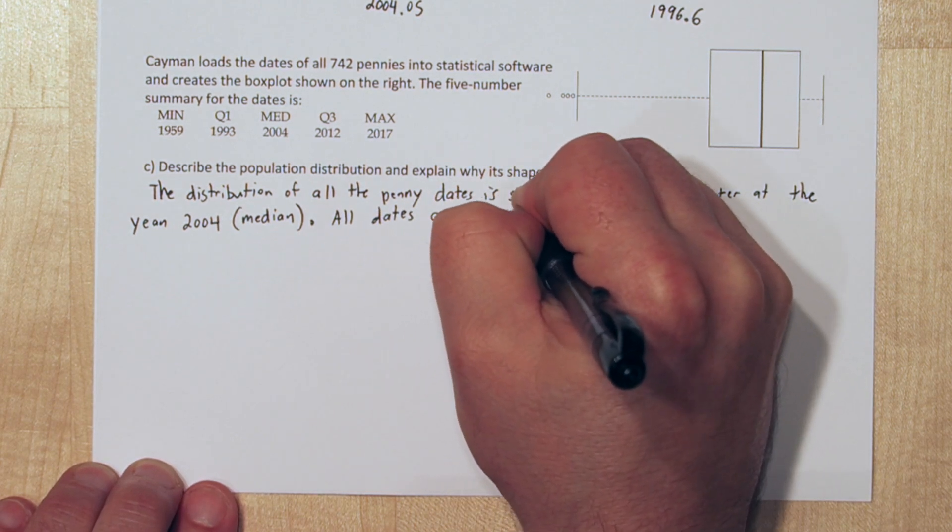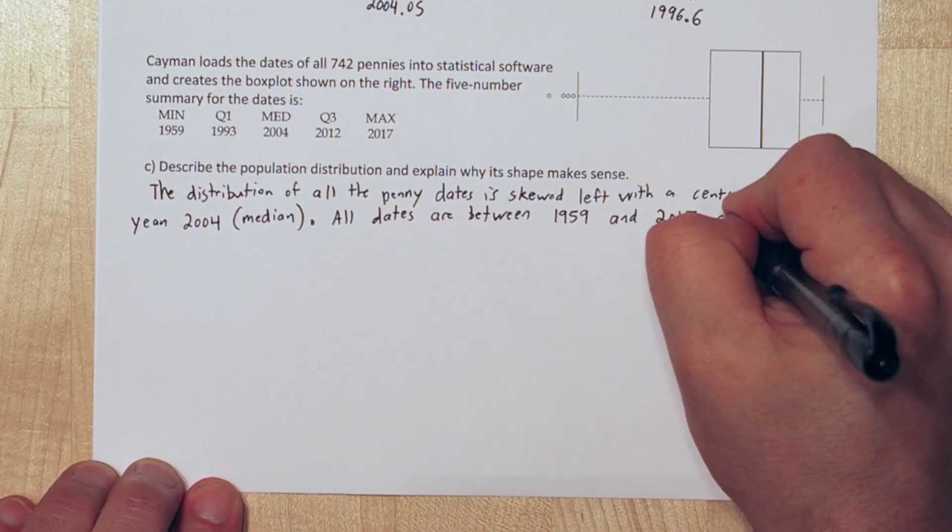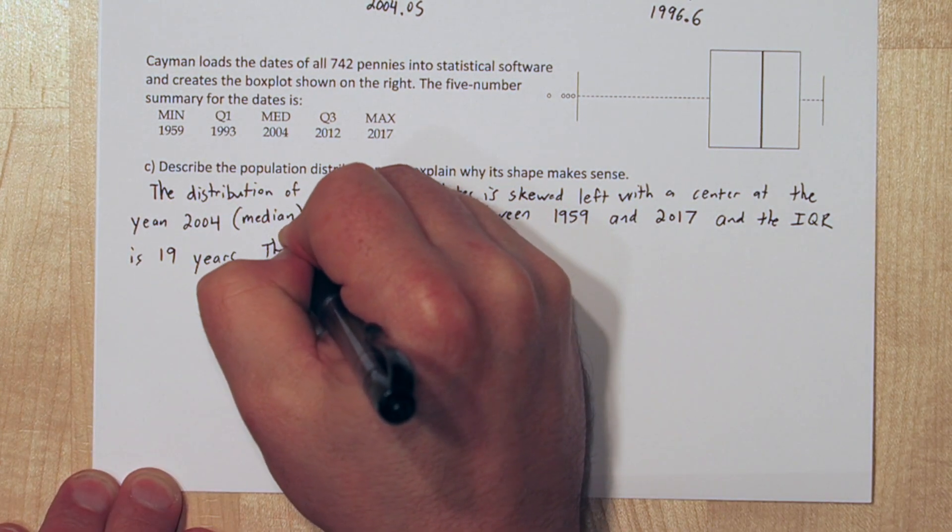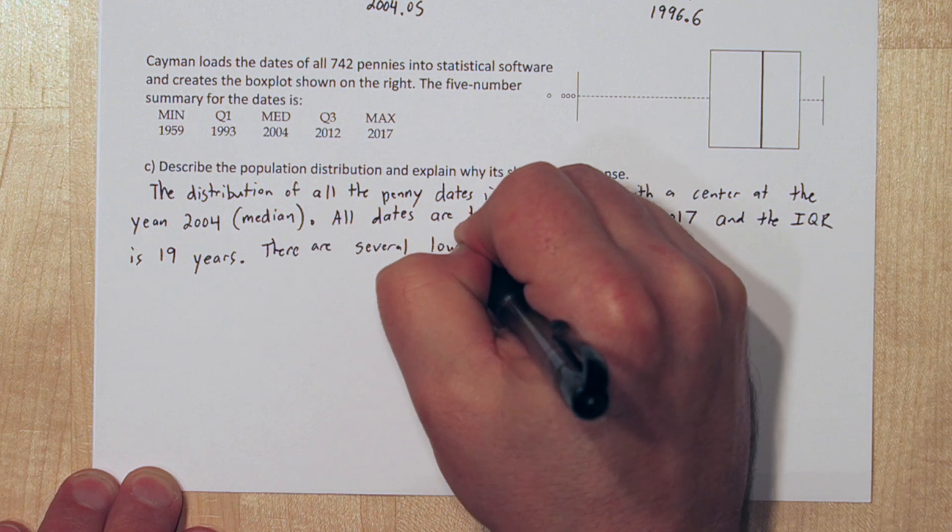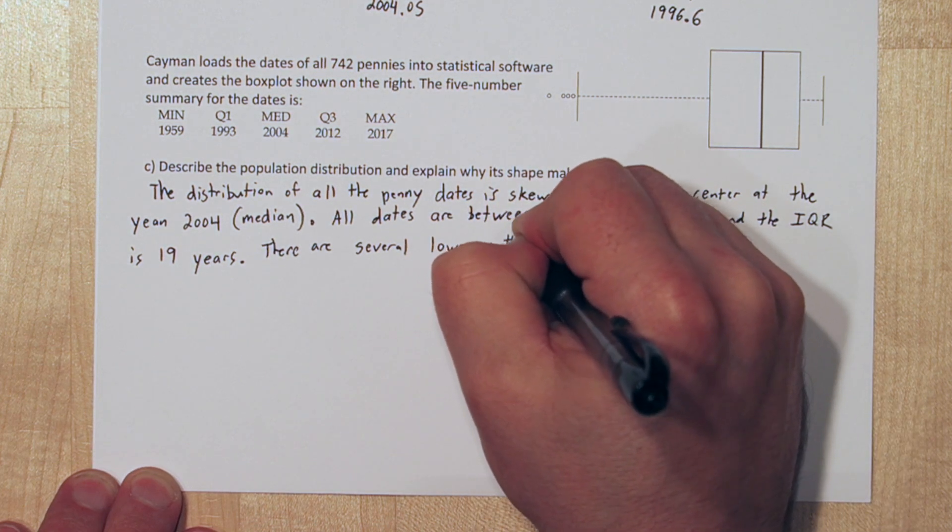All the dates are between 1959 and 2017, and the IQR is 19 years. We can get IQR by subtracting quartile 3, which was 2012, from quartile 1, 1993.